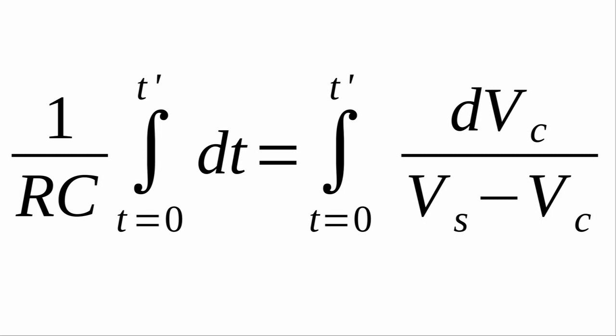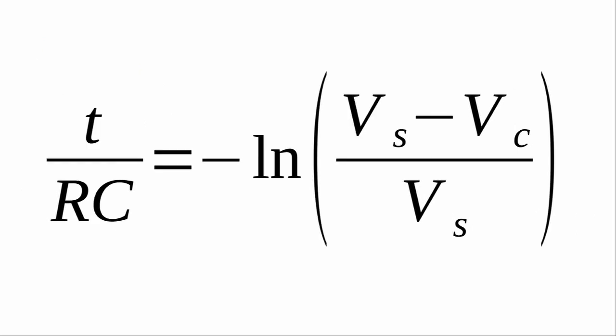There are two integrals to be performed, and they are quite simple. The two limits that we have for the integral are t equals 0, which is the moment in time when the capacitor starts to charge, and t equals t prime, which is just some arbitrary time that we are interested in and occurs after the capacitor has started charging. After integrating and evaluating at the limits, the left-hand side integrates to t, and the right-hand side is just the natural logarithm of Vs minus Vc divided by Vs.